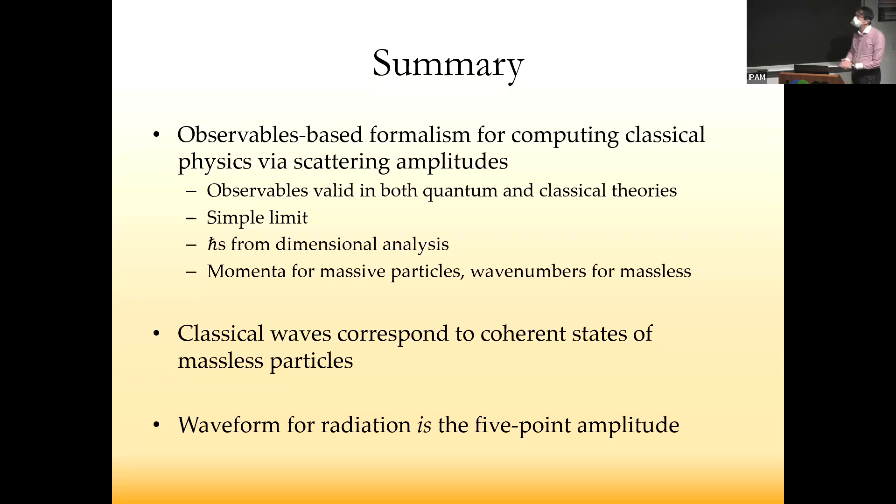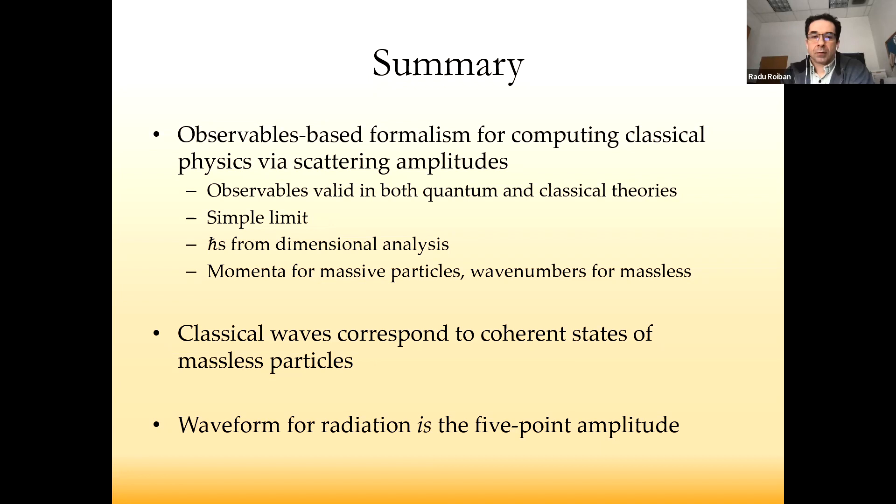Let me flash my summary slide. I've reviewed the observables-based formalism for classical physics via scattering amplitudes. I've shown you how to incorporate classical waves via coherent states and how to directly compute the waveform for radiation. The message to summarize in one line is that the waveform is basically the five-point amplitude. Thank you very much.